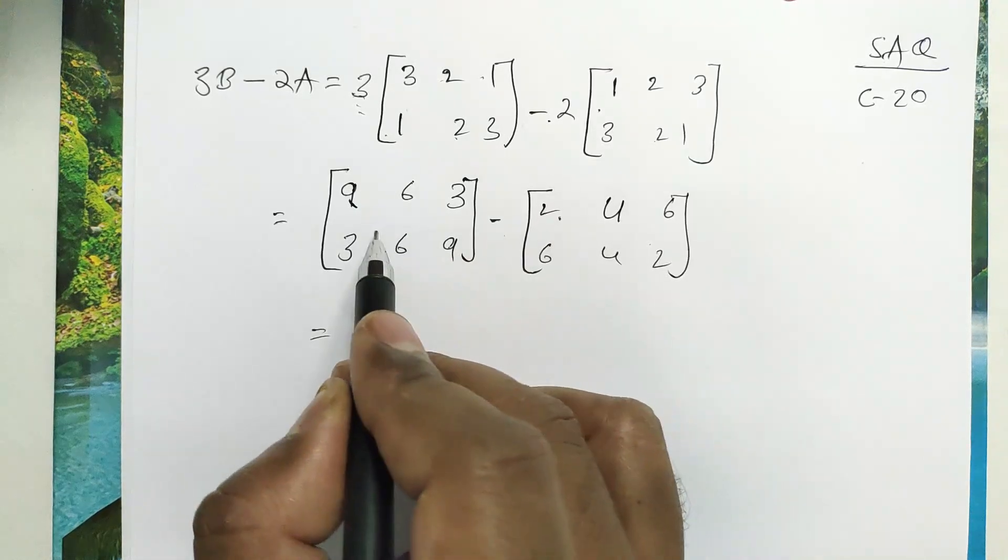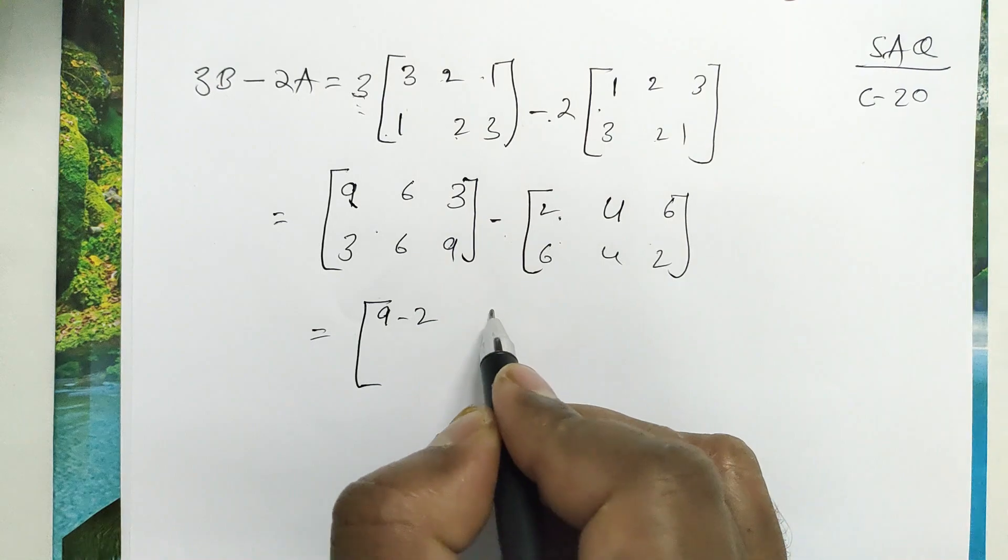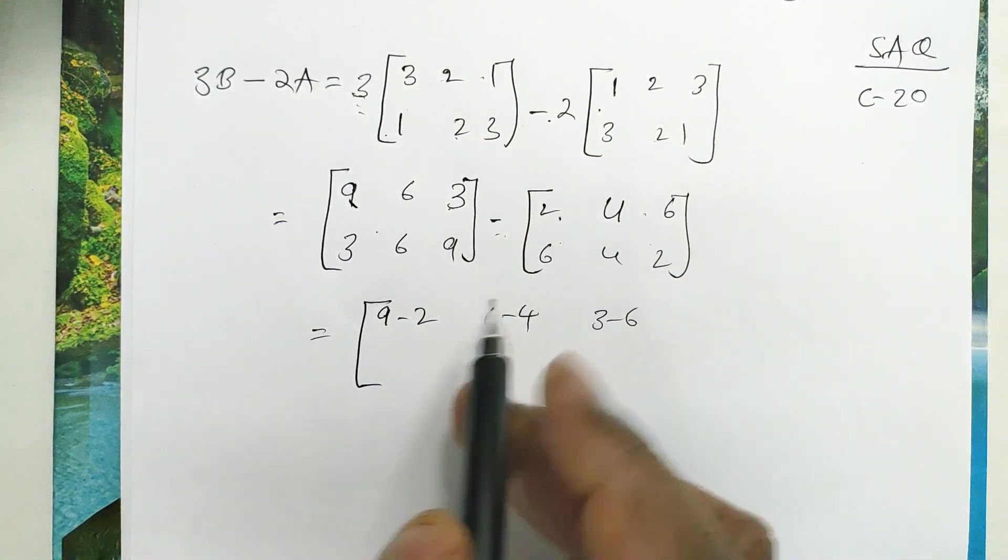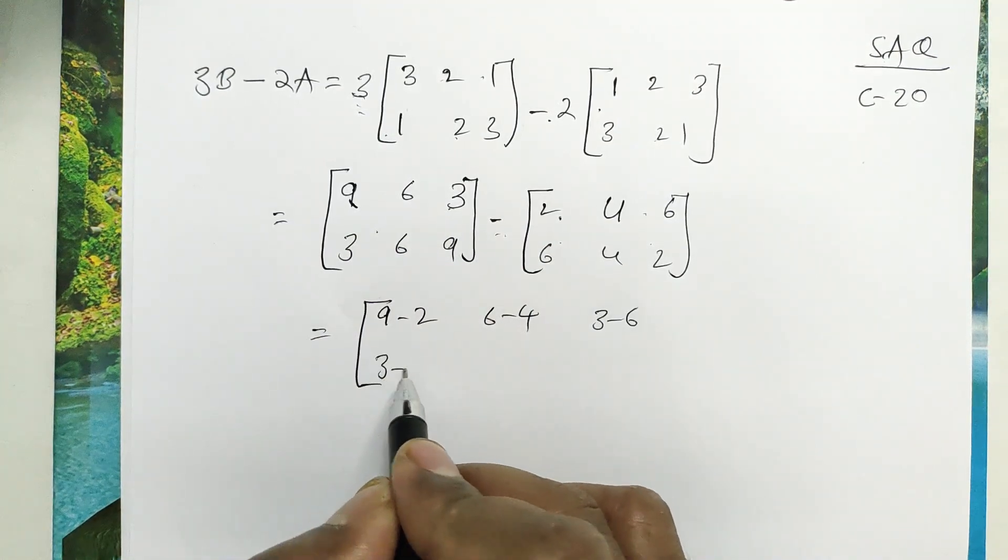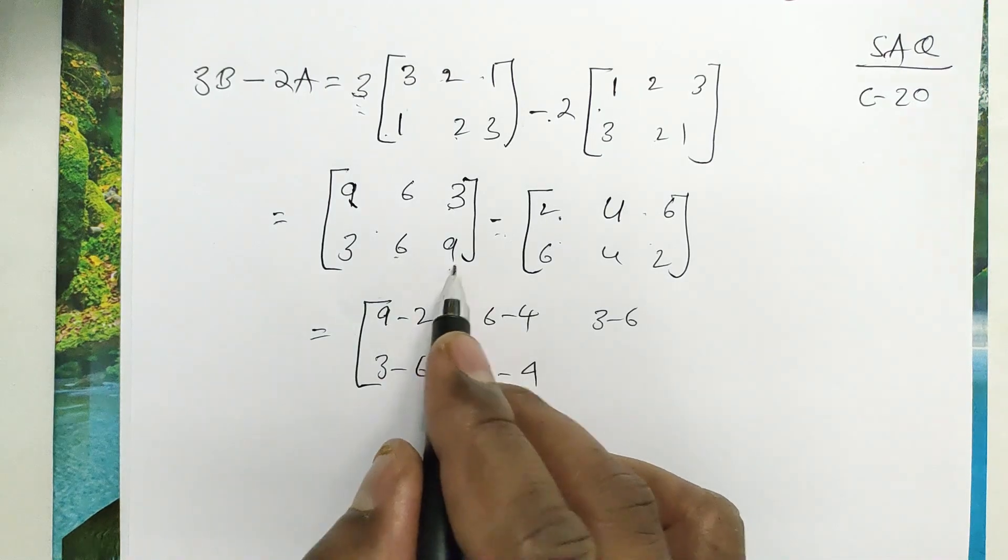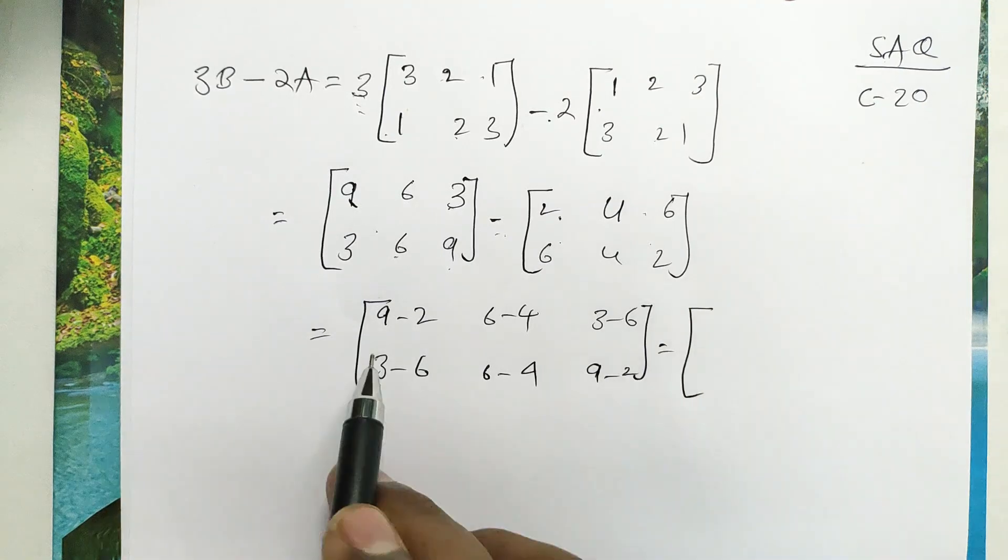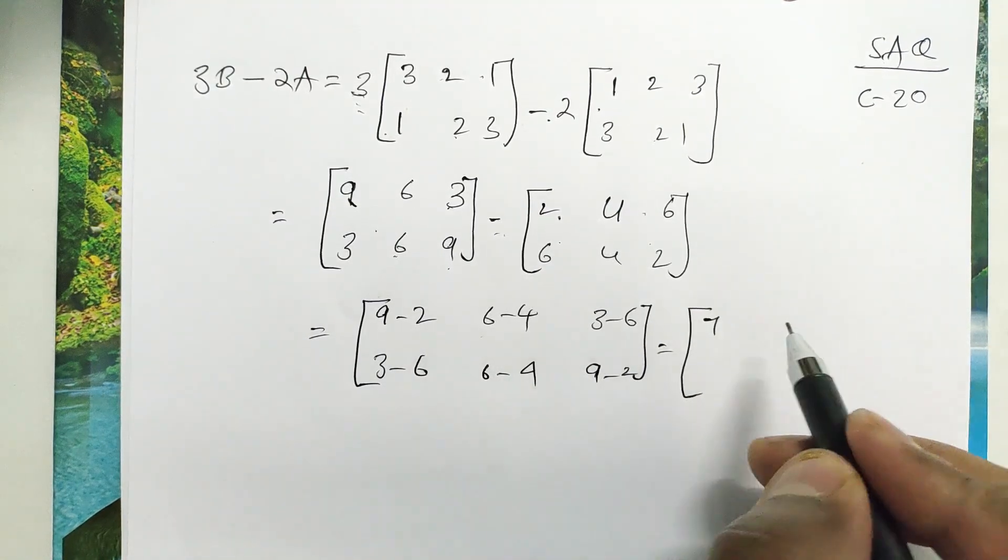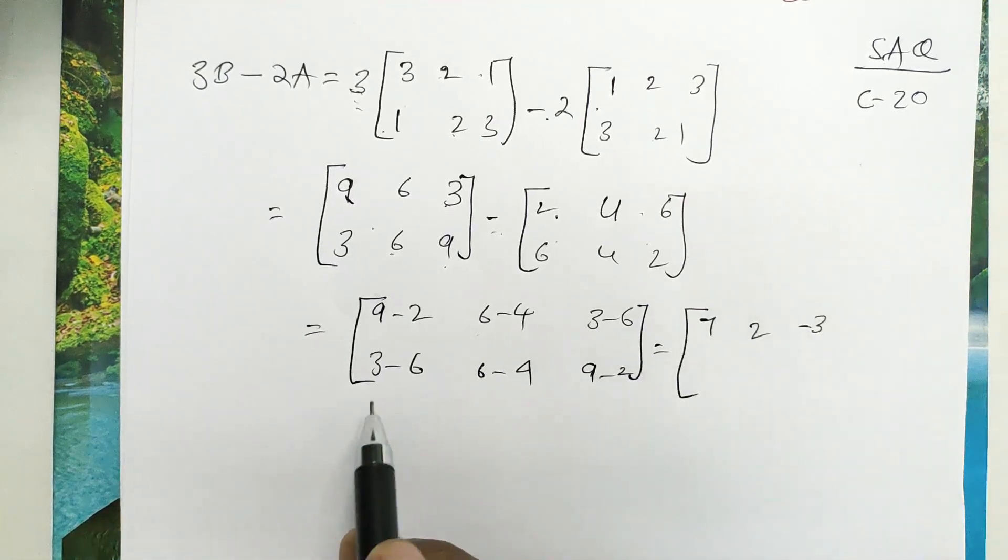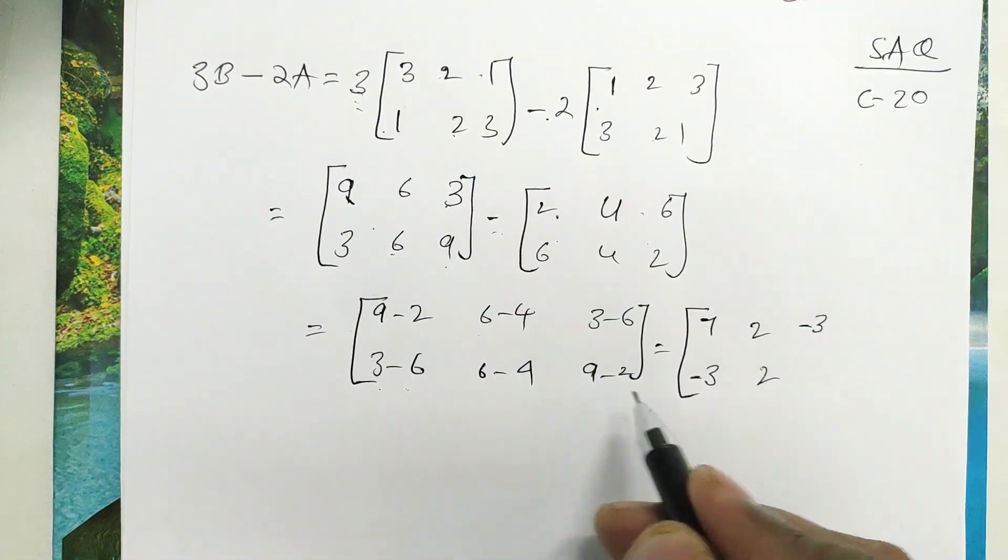This matrix minus this matrix: 9 minus 2 is 7, 6 minus 4 is 2, 3 minus 6 is minus 3, 3 minus 6 is minus 3, 6 minus 4 is 2, 9 minus 2 is 7.